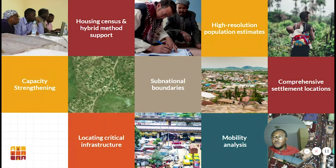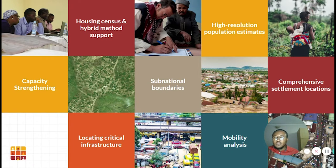GRID3, which stands for Georeference Infrastructure and Demographic Data for Development, works with countries to generate, validate and use geospatial data on population, settlement, infrastructure and other boundaries. GRID3 is funded by the Bill and Melinda Gates Foundation and the United Kingdom's Foreign, Commonwealth and Development Office. It is implemented by Columbia University's Centre for International Health Science Information Network, the United Nations Population Fund, WALPOP at the University of Southampton and the Flomander Foundation.